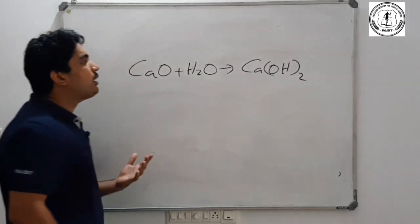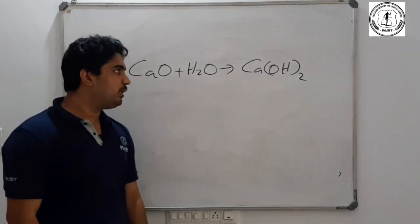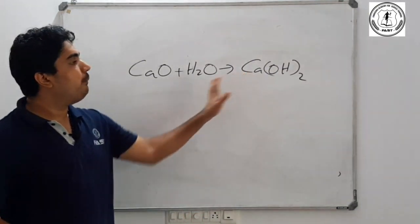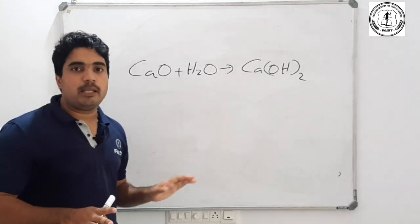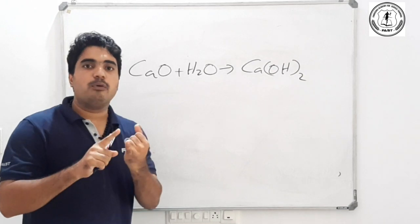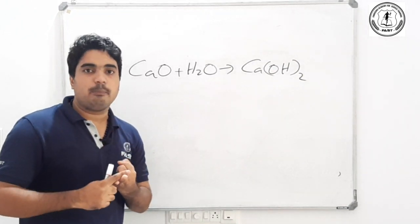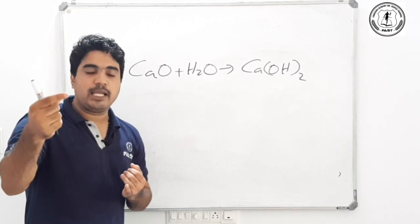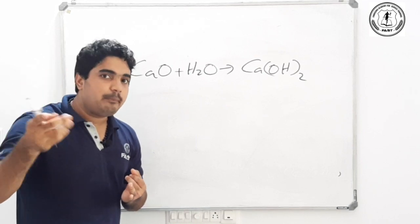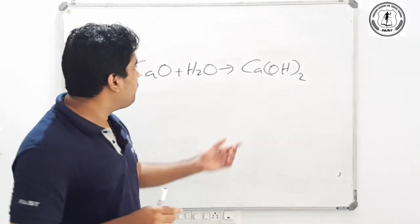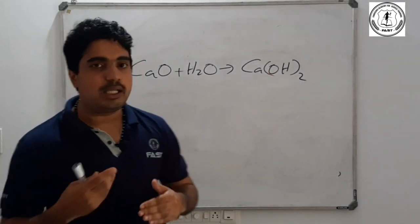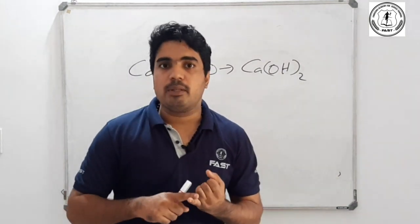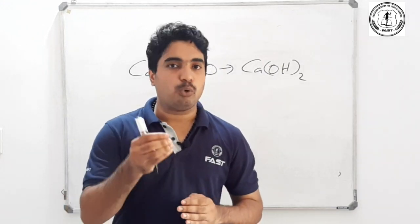Calcium hydroxide has 4 names. The first one is milk of lime. The second is lime water. The third is slaked lime. The fourth is caustic lime. So the four names are: milk of lime, lime water, slaked lime, and caustic lime.